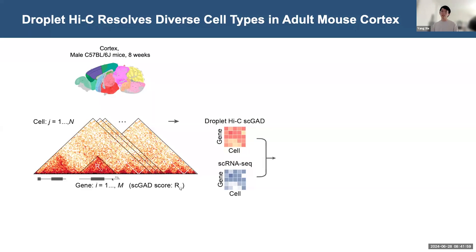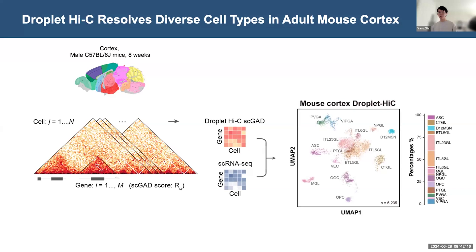To cluster our single-cell Hi-C data, we first calculate the single-cell GAD score for each gene. With this, we can convert the cell-by-chromatin interaction matrix into a cell-by-GAD score matrix, which enables co-embedding with a single-nucleus RNA reference to carry out cell type annotations. With this strategy, we are able to resolve 15 cell subclasses from the mouse cortex Droplet Hi-C data, including five non-neurons, seven glutamatergic neurons, and three GABAergic neurons.